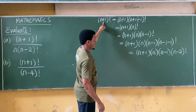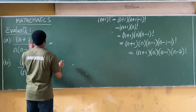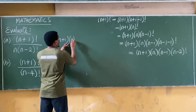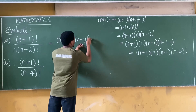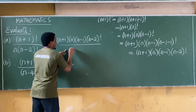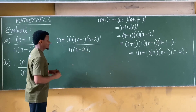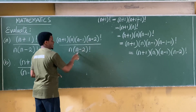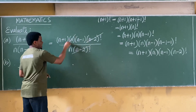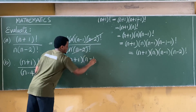In essence, we can express n+1 factorial in terms of n-2 factorial using this notation: n+1 factorial equals n+1 into n into n-1 into n-2 factorial. The denominator is n into n-2 factorial. Now we cancel like terms — n-2 factorial cancels with n-2 factorial, and n cancels with n, leaving n+1 into n-1.